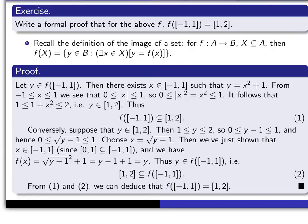Here's my proof. Let's look at the skeleton first. I begin by picking a y in the image of [minus 1, 1] and prove that y is in the right-hand side, [1, 2]. Then in the second paragraph, I take a y in the right-hand side and prove it's in the left-hand side.